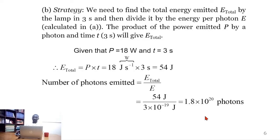This number of photons is very large. It therefore means even just for 3 seconds and 18 watts, a fluorescent lamp is able to produce billions or rather trillions of photons.